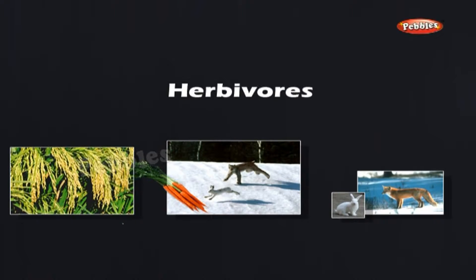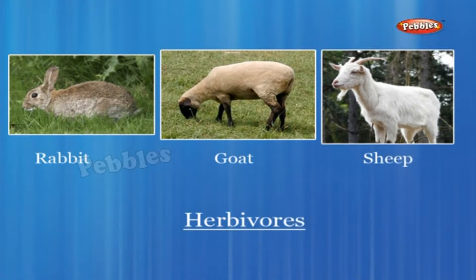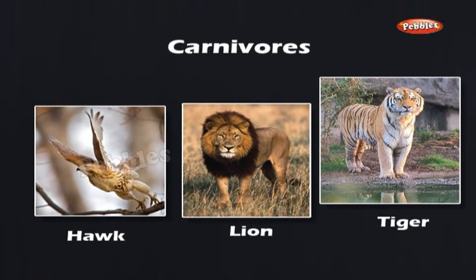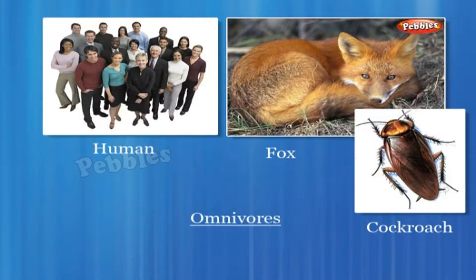Herbivores are organisms that obtain their food by directly feeding on plants, e.g., rabbit, goat, sheep, etc. Carnivores obtain their food by feeding on the meat and flesh of other animals, e.g., hawk, lion, tiger, etc. Omnivores obtain their food by feeding on both plants and animals, e.g., humans, cockroaches, fox, etc.